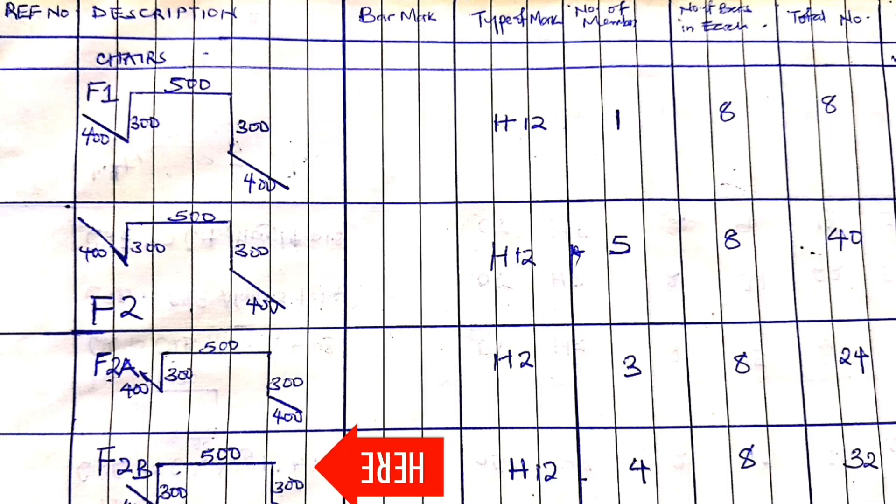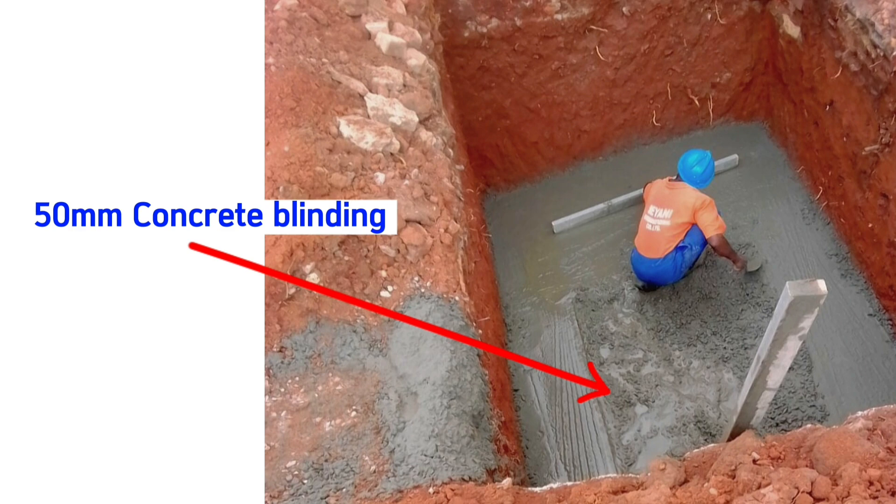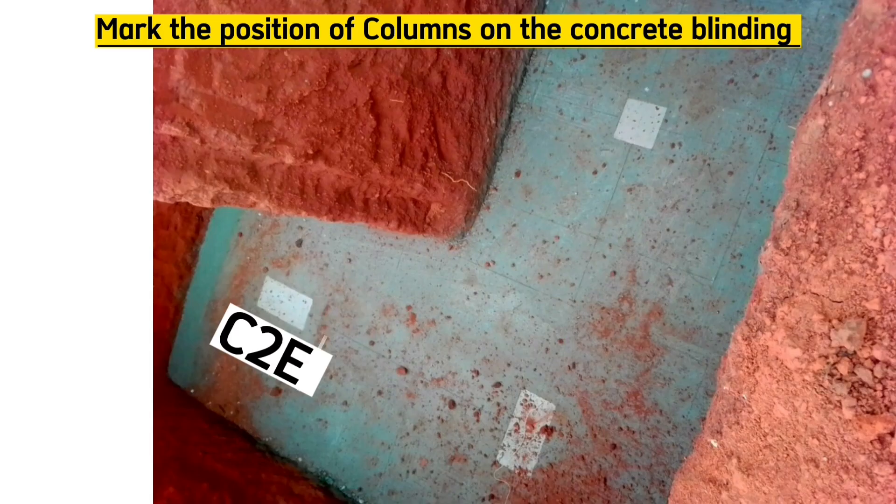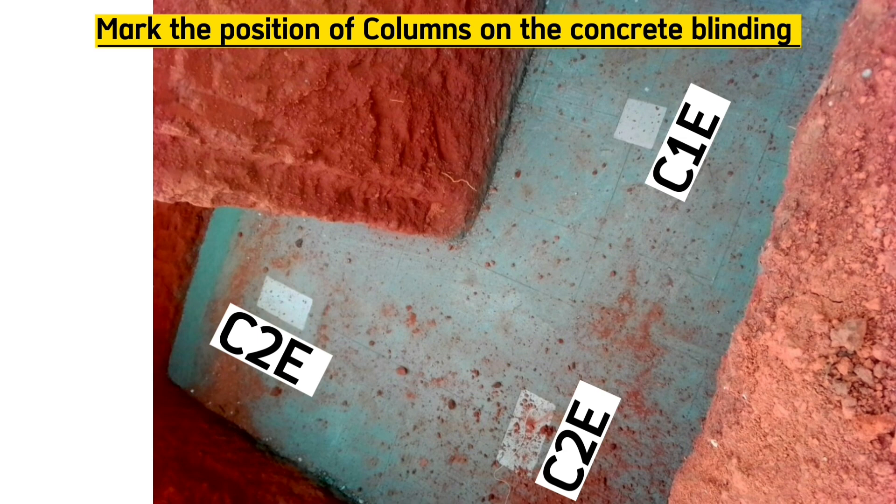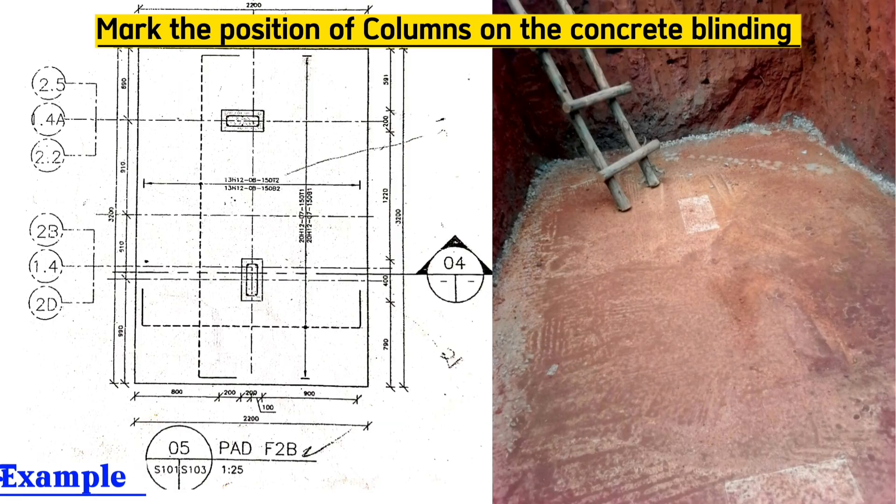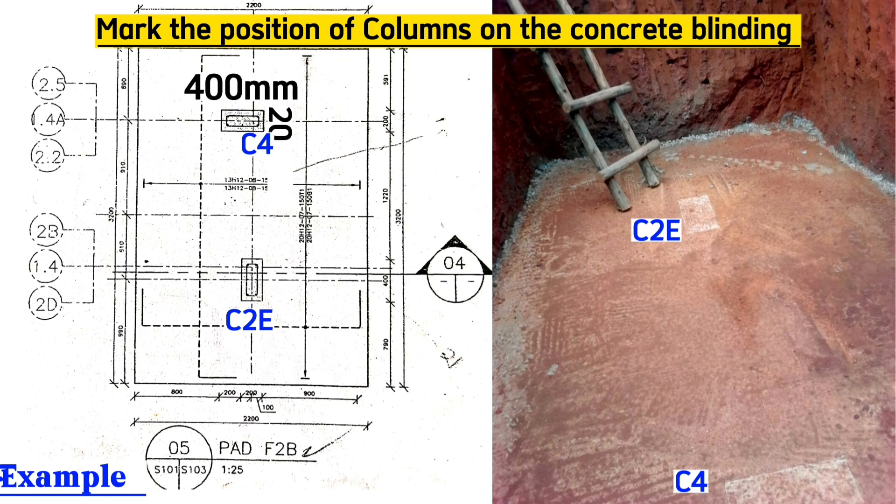After casting mass concrete in the base for blinding, mark the position for the columns with the help of grid lines and lime like this. For example, for this particular pad F2B, the drawing details that these columns are 400 millimeters along the length and 200 millimeters along the width, and that's how we exactly marked it on run.